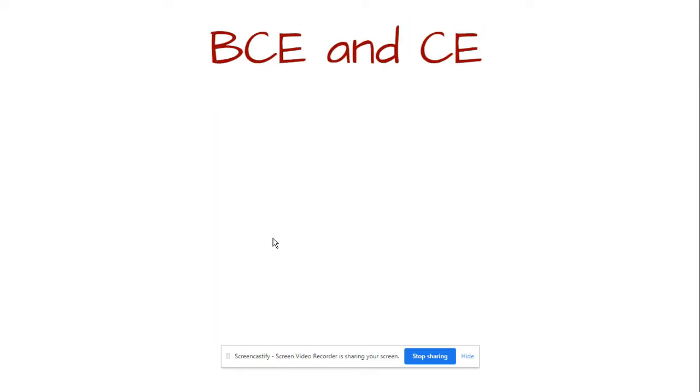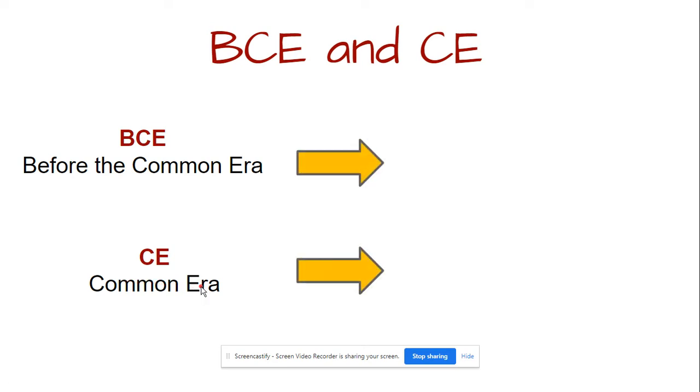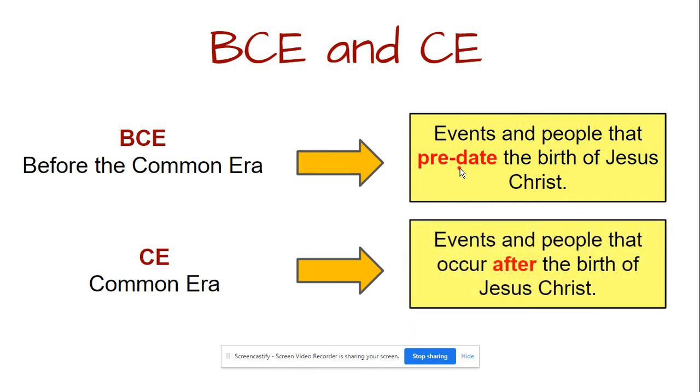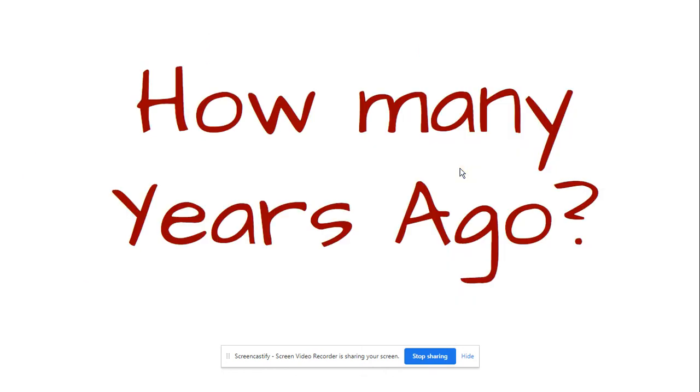So let's talk about BCE and CE. BCE stands for before the common era and CE stands for common era. BCE is for events and people that predate or come before the birth of Jesus Christ, and CE will be for events and people that occur after the birth of Jesus Christ.